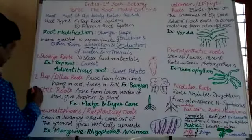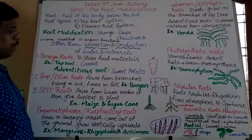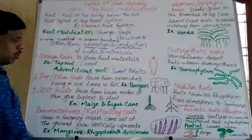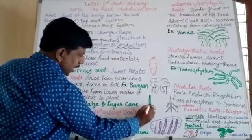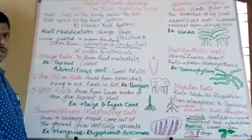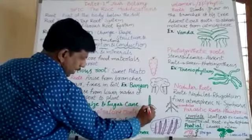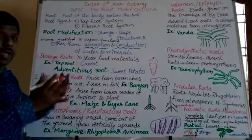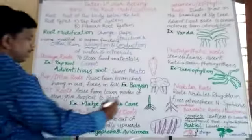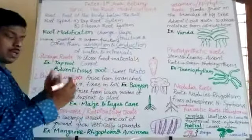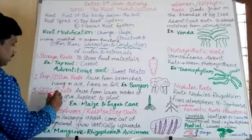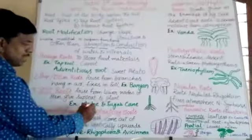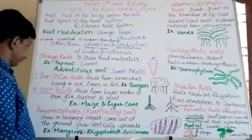The third type is stilt roots. Stilt roots are the roots that arise at the lower nodes of the stem and give mechanical support to the plant. They are known as stilt roots. For example, maize and sugarcane.